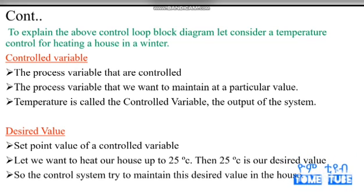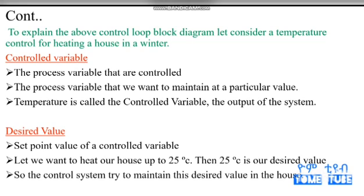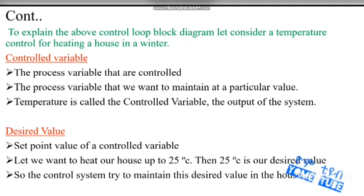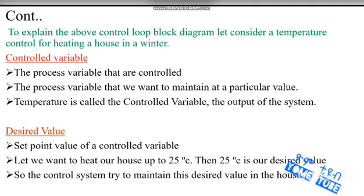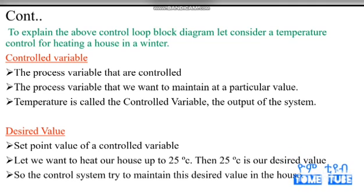Temperature control is a desired point. This is a physical parameter. The controlled variable is normal — temperature is controlled. The controlled variable is a system. Temperature control system is a controlled variable, and temperature is normal. Maintaining the system is normal.